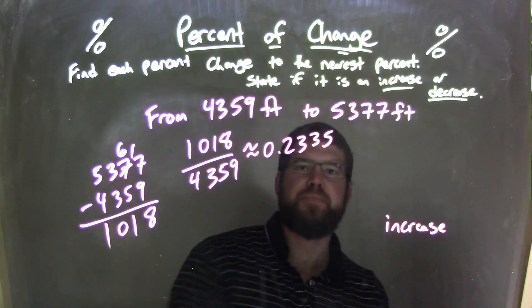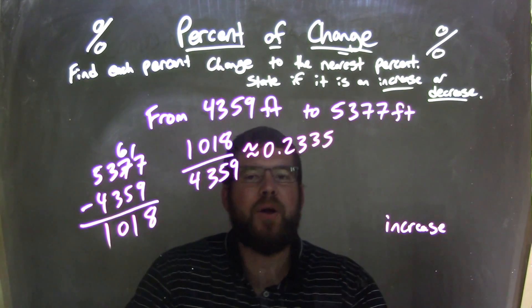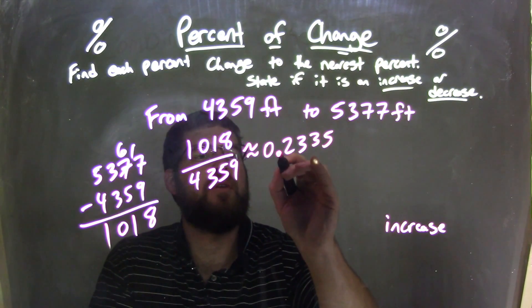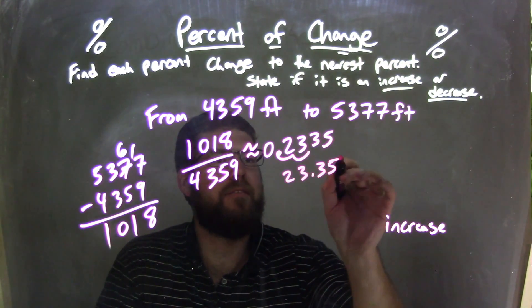Yeah, that's good enough. So 0.2335, well I can convert that to be a percent if I move the decimal two units to the right, 1, 2, I'm left with a 23.35 percent.